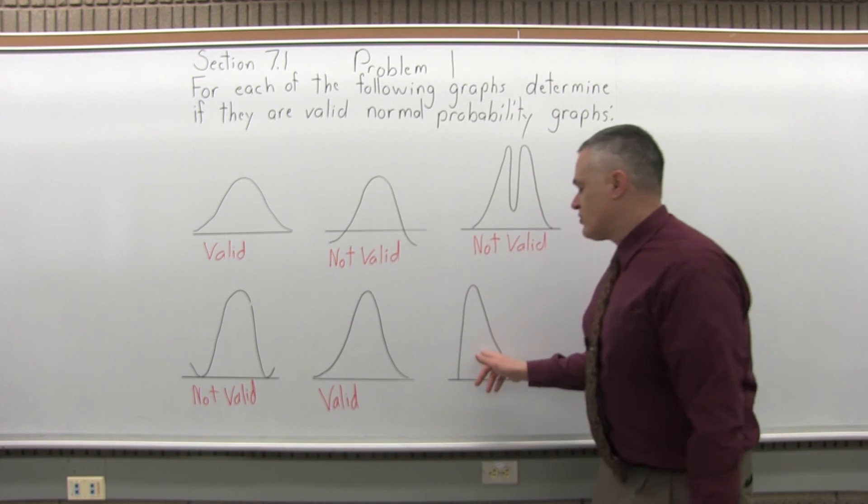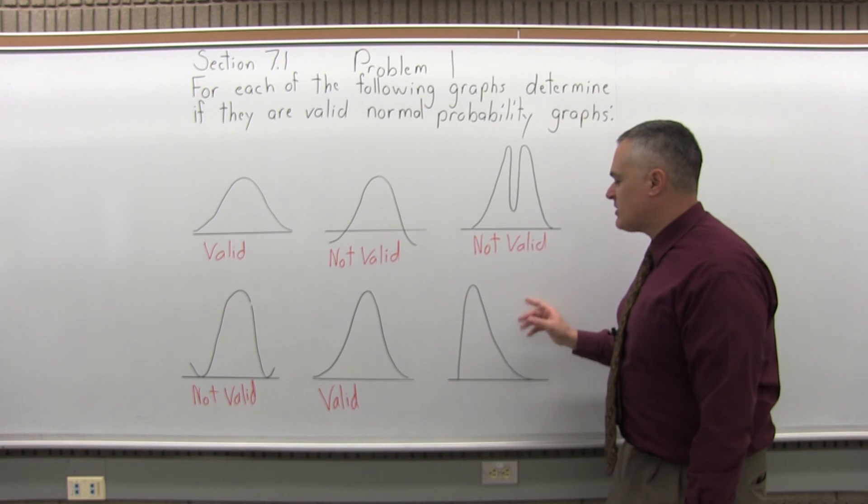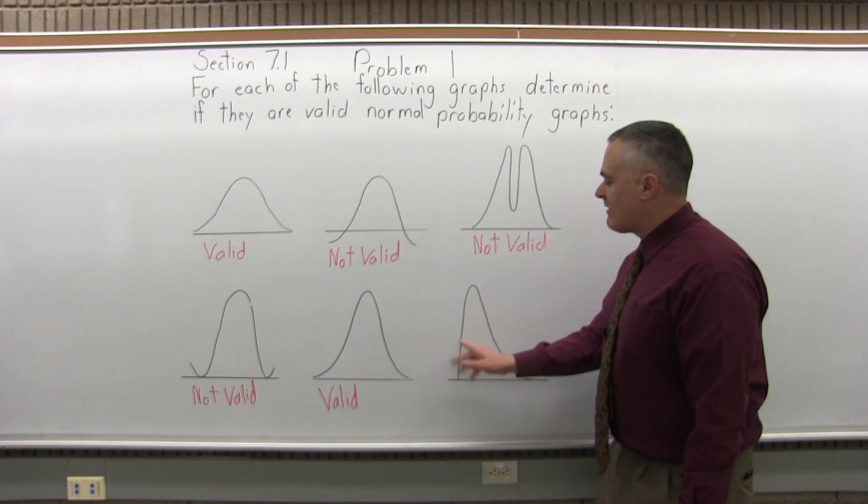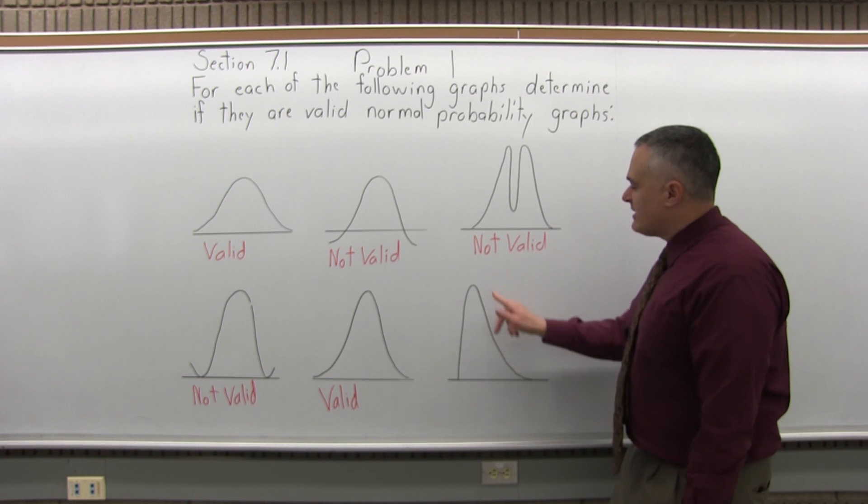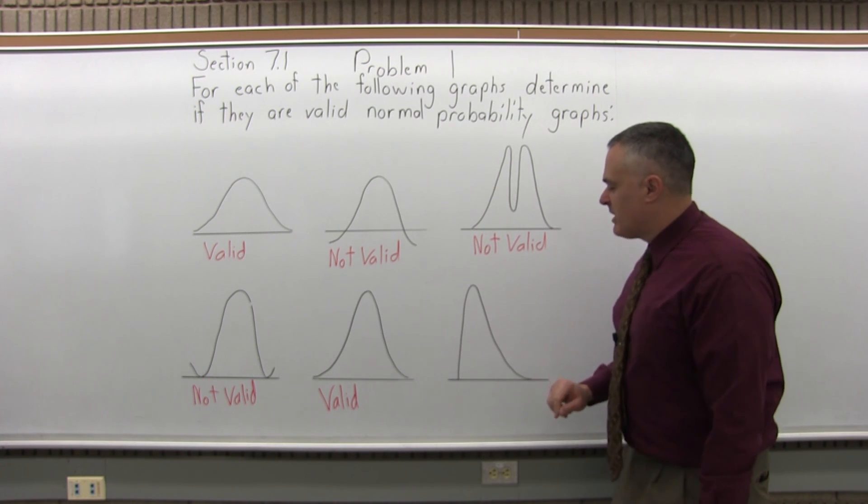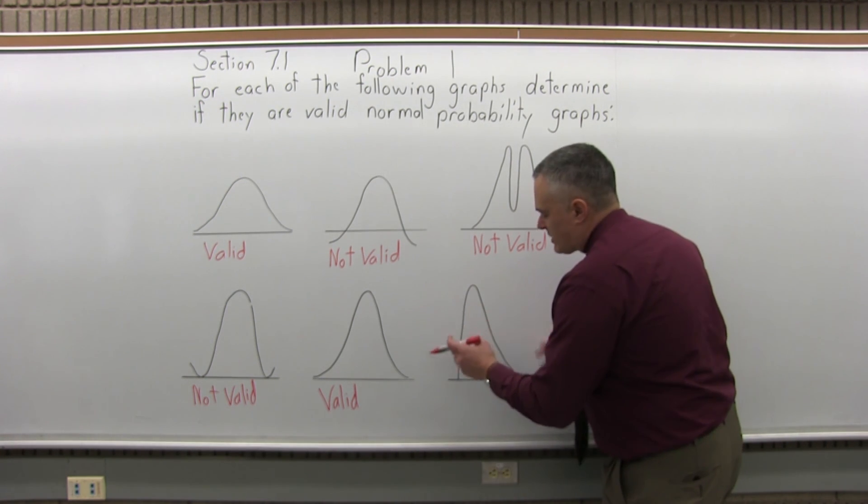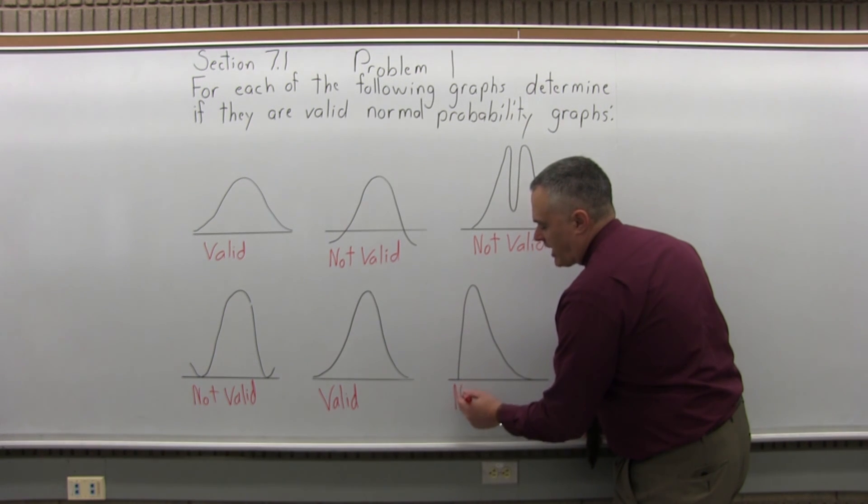And the next one is not valid. It has the wrong shape. It's not symmetric. You can see the left half of it is more close to straight up and down. And the other half has, the right half has kind of the right shape, but it's not symmetric. It's not bell shape, so it's not a valid normal probability graph.